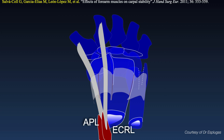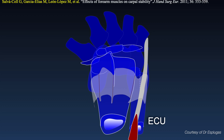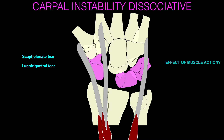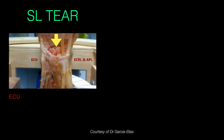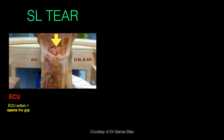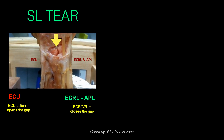For instance, when the APL and the ECRL muscle tendons are loaded, a distal carpal row and mid-carpal joint supination is seen, while loading the ECU tendon causes the distal carpal row and the mid-carpal joint to rotate into pronation. In the case of scapholunate ligament injury, activating the ECU muscle will open the scapholunate gap as it causes an intracarpal pronation, whereas activation of the ECRL and the APL will close the scapholunate gap by causing an intracarpal supination.